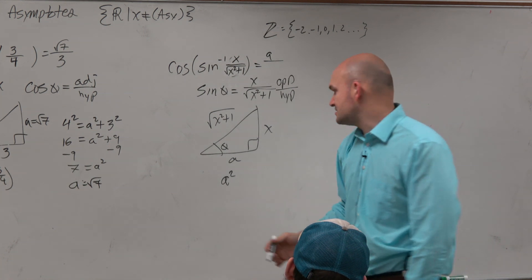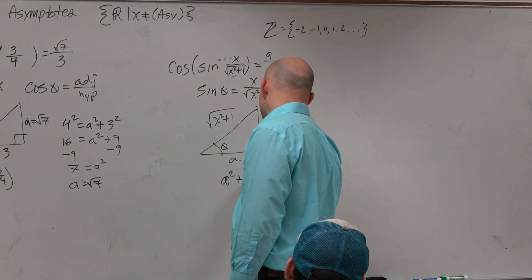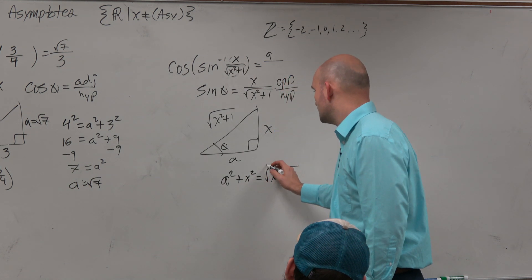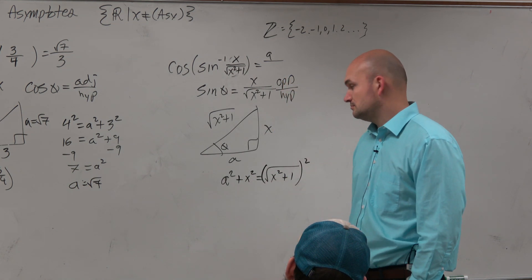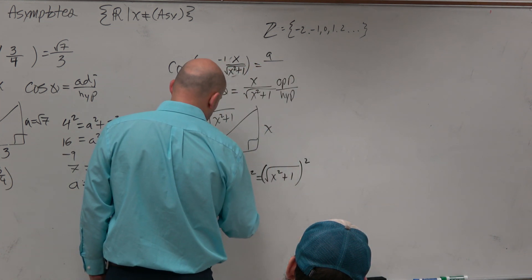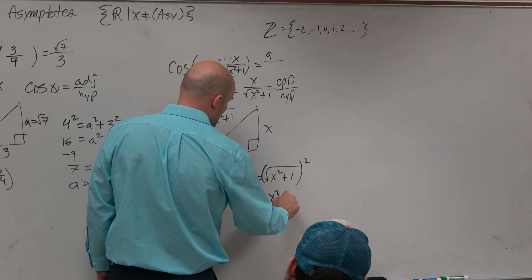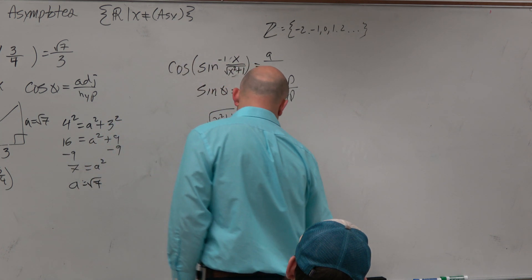So we'll have a squared plus x squared equals square root of x squared plus 1 squared. So I get a squared plus x squared equals x squared plus 1, subtract x squared, subtract x squared.